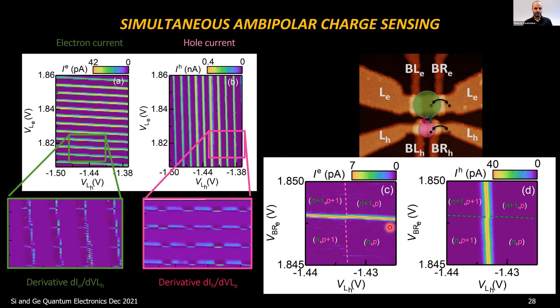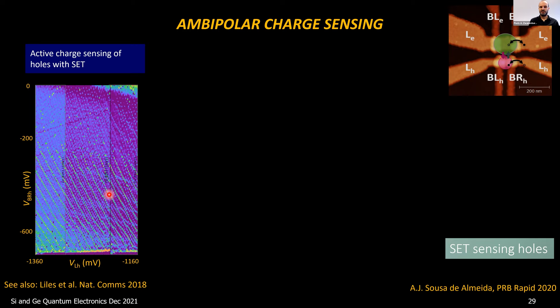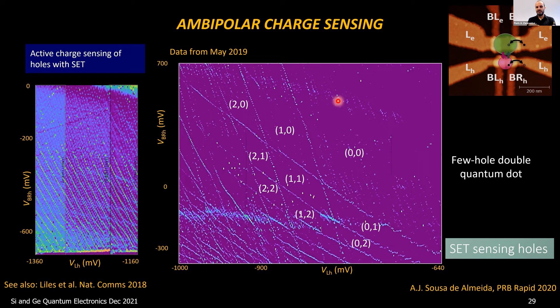Active charge sensing means positioning the charge sensor on the flank of a peak where it's most sensitive to electric field changes, then using a feedback loop to move it back every time there's an upset. This allows us to go to the few-hole regime: we can remove all holes from a double quantum dot and add one hole to the left dot, one to the right dot, or one in each.